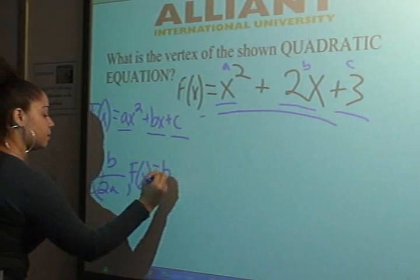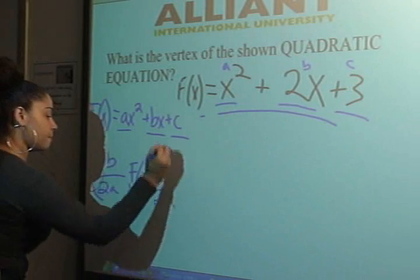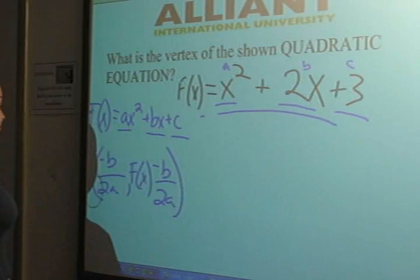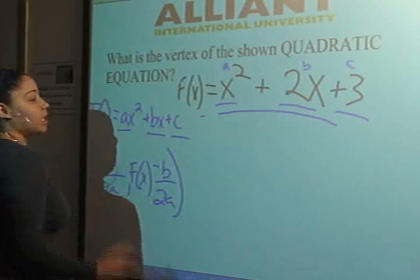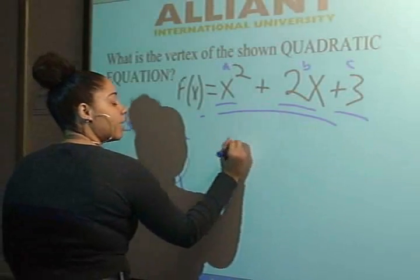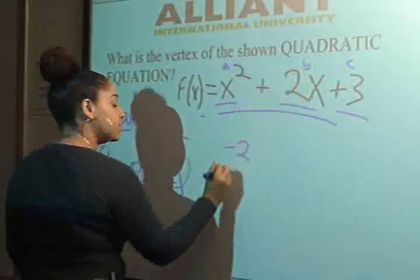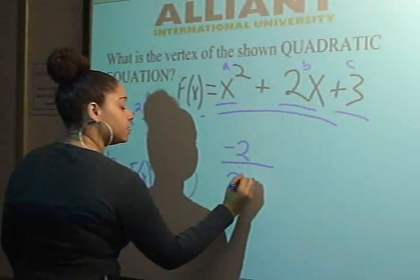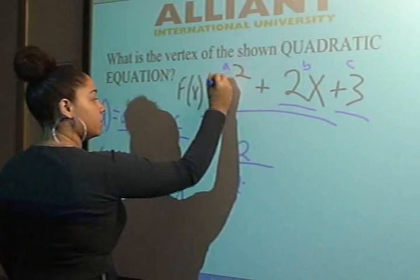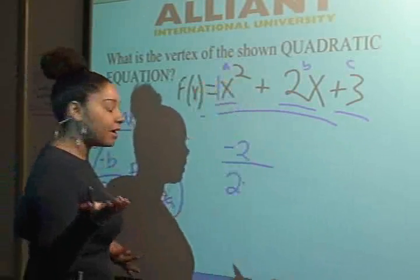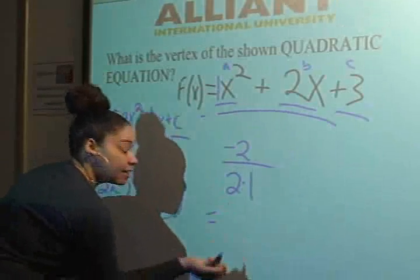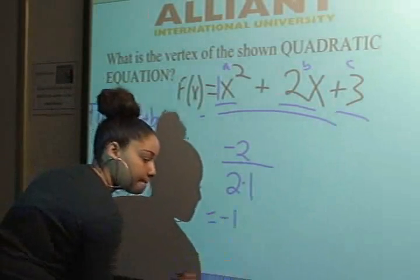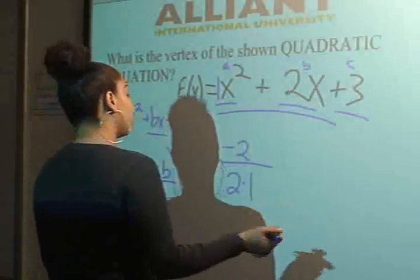For your x-coordinate, you're plugging in: negative 2 (because b is 2) over 2 times 1 (because there's nothing in front of x², so a is 1). That gives you -2 over 2, which equals -1.